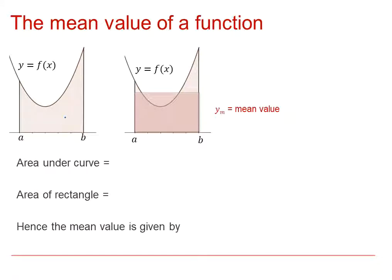The area underneath this function equals the area of the rectangle, and the height of that rectangle is y_m, the mean value of the function. The area under the curve is the integral of f(x) dx from x = a to x = b, and that same area equals the area of the rectangle, which is (b - a) times the height y_m. Therefore, the mean value is given by y_m = 1/(b - a) times the integral of f(x) dx from x = a to x = b.